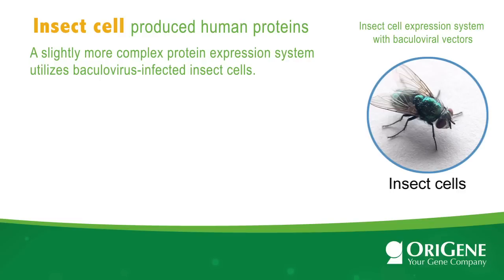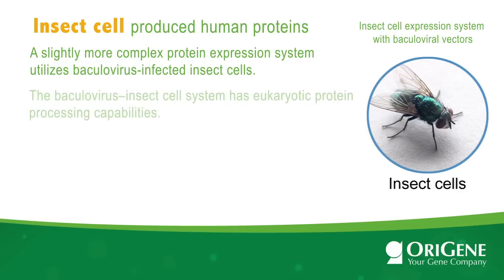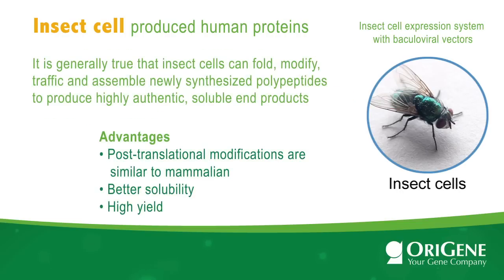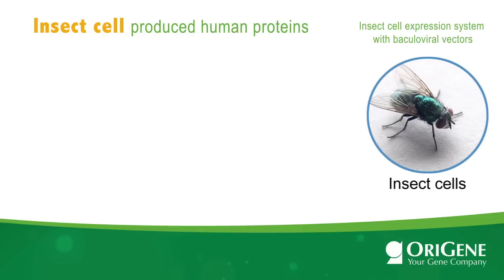A slightly more complex protein expression system utilizes baculovirus-infected insect cells. It is generally acknowledged that the baculovirus insect cell system has eukaryotic protein processing capabilities. Insect cells can fold, modify, traffic, and assemble newly synthesized polypeptides to produce highly authentic, soluble end products.